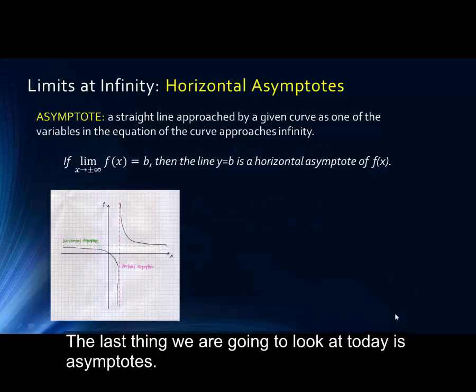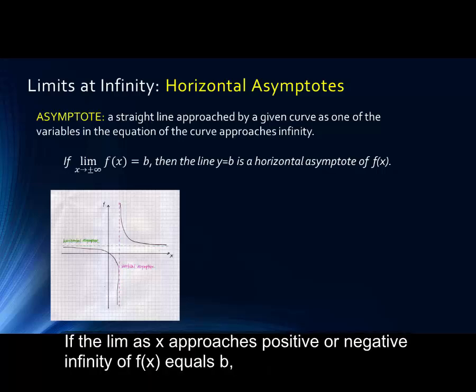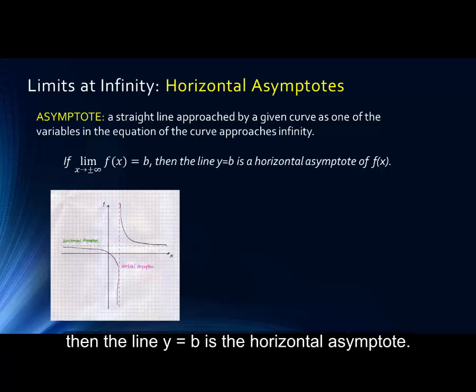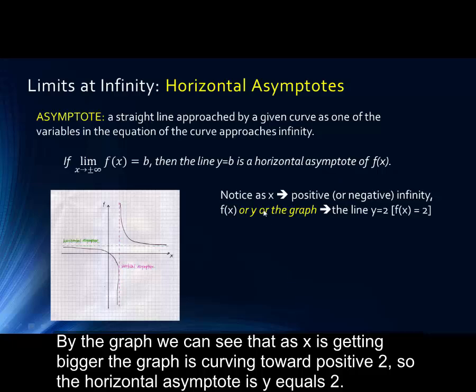The last thing we are going to look at today is asymptotes. A horizontal asymptote is a line y equals a constant or f of x equals a constant, and this would be the same value as the limit at infinity for the function. If the limit as x approaches positive or negative infinity of f(x), if this equals b, then the line y equals b is the horizontal asymptote of f(x). Notice as x goes towards positive or negative infinity, f(x) or y on the graph goes to the line y equals 2. So in this graph, we say there is a horizontal asymptote at y equals 2, which you can see illustrated by the bright yellow line.